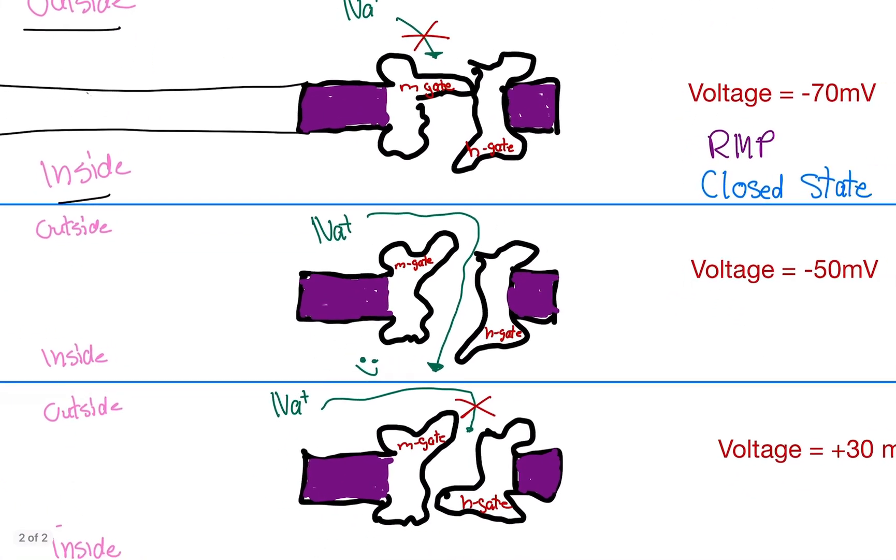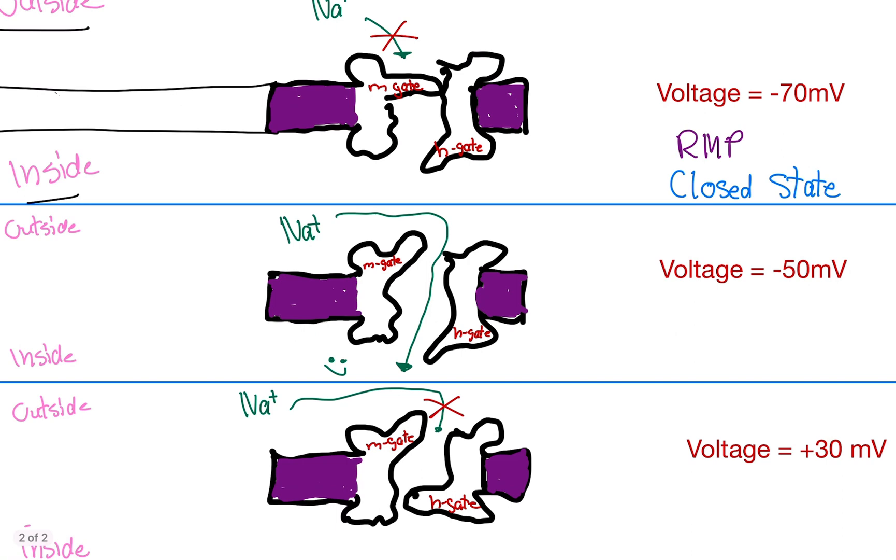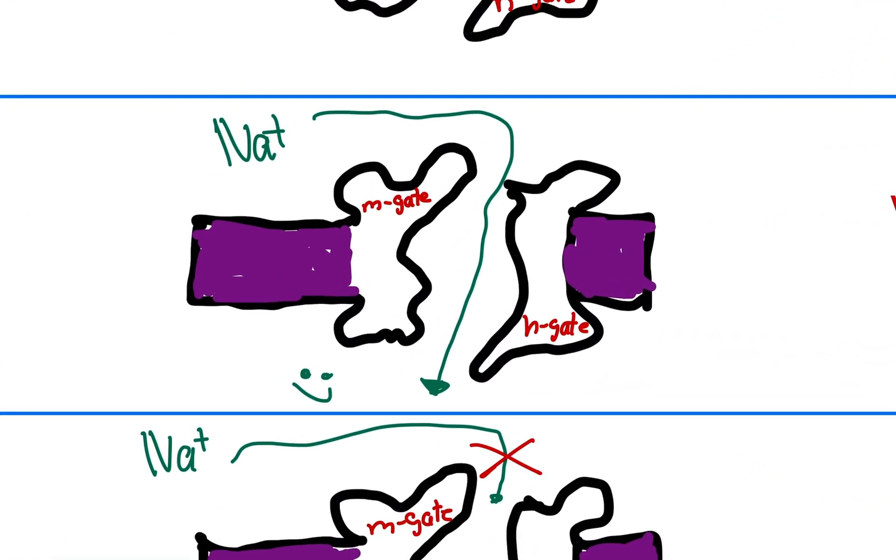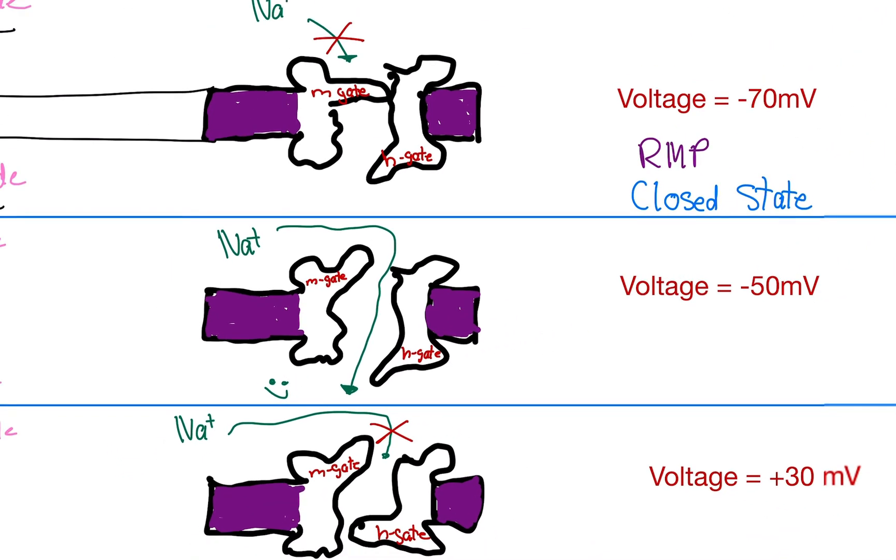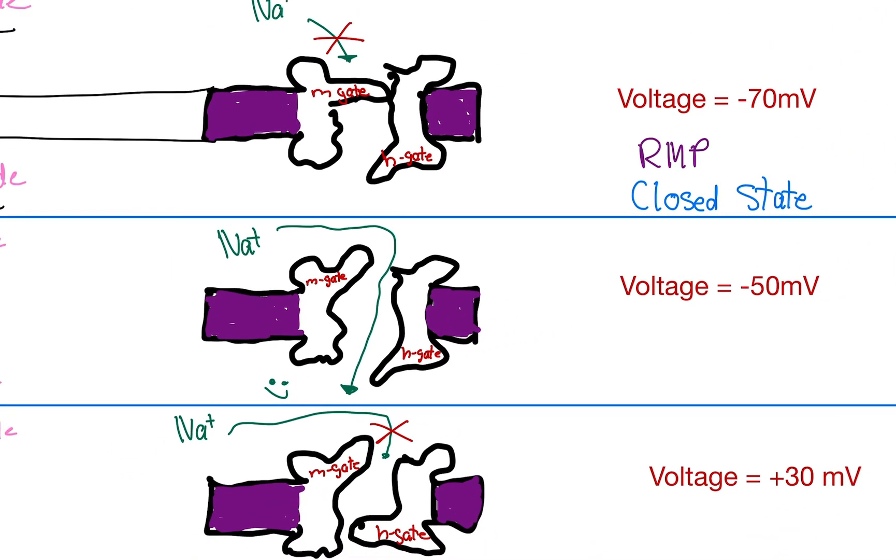Now when we move up to negative 50 millivolts, this could be like threshold, for example. Notice both gates are wide open. So sodium can go inside the cell. We've got sodium traveling through the gate. Both gates, the M gate is open, and the H gate is open. We can go straight through. If both gates are open, we call this open state. Pretty simple, right?